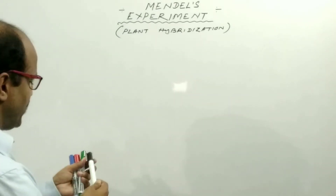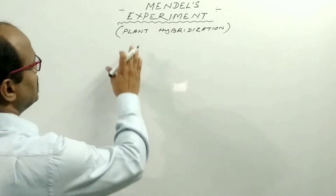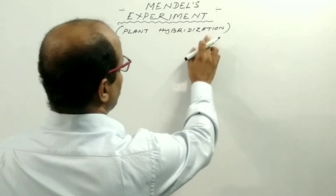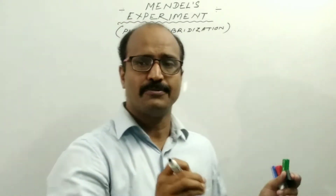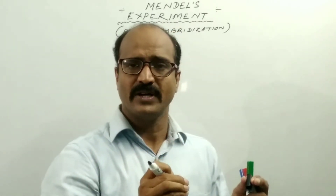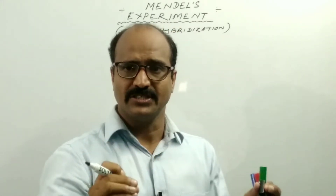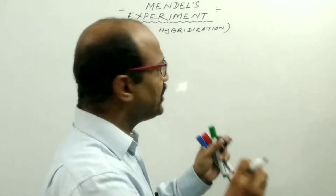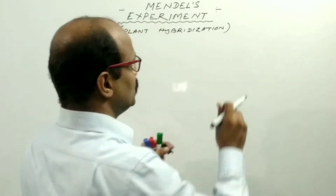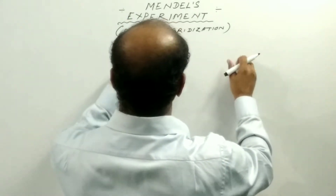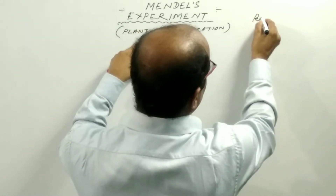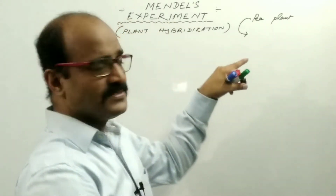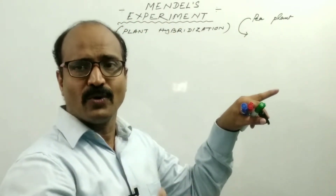What is the name of Mendel's experiment? The name of Mendel's experiment is known as plant hybridization. Hybridization means if you take different types of plants and cross them, this is known as hybridization. So Mendel took different strains of garden pea plant and crossed them. Mendel chose the garden pea plant, which was easily available at the locality of Mendel.